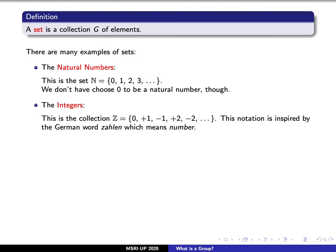We can also consider the integers. We'll denote this by a capital Z. These will be the natural numbers, along with their negatives. So, for example, some integers will be 0, plus 1, minus 1, plus 2, minus 2, and so forth. This notation is inspired by the German word Zahlen, which simply means number.